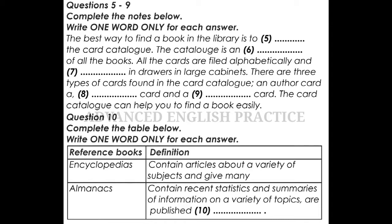For example, all science books are numbered from 500 through 599. Each different field of science has a number within the 500 category. For example, astronomy is 520 and chemistry is 540.